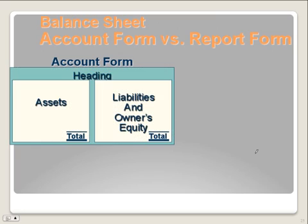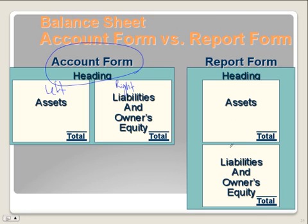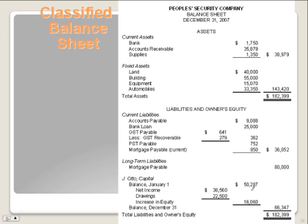Remember at the very beginning of the course we had an account form balance sheet where we had the assets on the left-hand side and the liabilities and owner's equity on the right-hand side — that was called the account form. Now we are using the report form, which we switched to once we expanded the owner's equity section and added the revenue, expense, and drawings accounts, with assets on top and liabilities and owner's equity underneath. Now we are going to expand it one more time and call it the classified balance sheet.